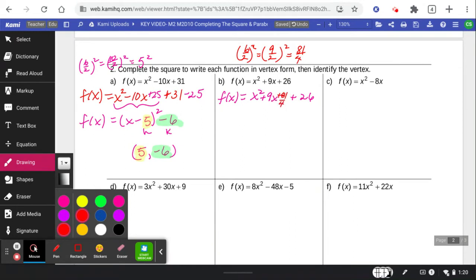So we're adding 81 fourths and subtracting 81 fourths to balance. If you did this in decimal form, I will take it. That makes the x plus 9 halves squared perfect square factors. And then we've got 26 minus 81 fourths. So you can do this as a decimal or you convert the 26 to fourths.